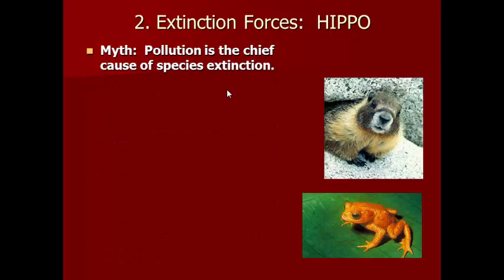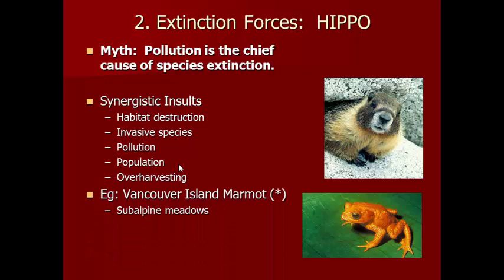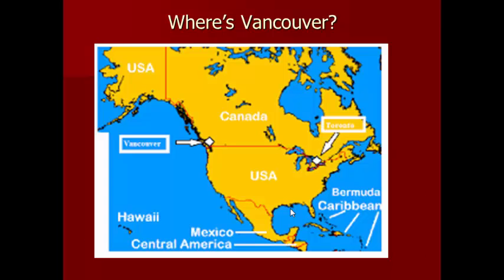Wilson talks about forces leading to extinction using the acronym HIPPO. He makes the point that people think pollution is the chief cause of species extinction, when in actuality it's population — the sheer number of people on the planet start to destroy habitat, bring in invasive species, pollute, and over-harvest. He talks about the Vancouver Island Marmot as an example of a species affected by habitat destruction.